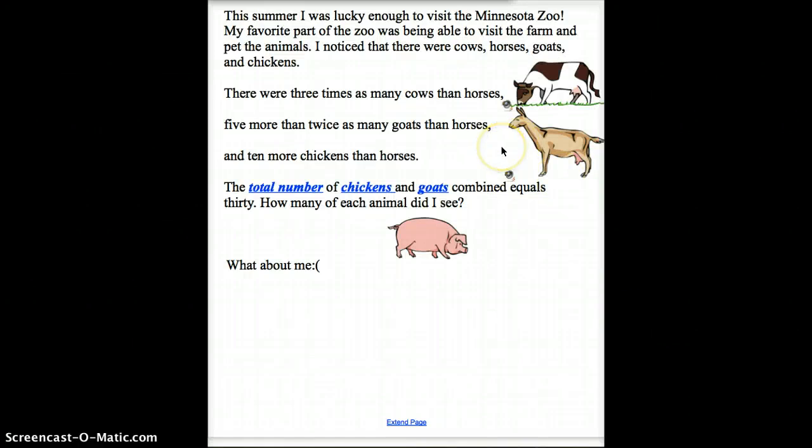The last question. We're at the Minnesota Zoo. My favorite part of the zoo was being able to visit the farm and pet the animals. I noticed that there were cows, horses. I guess I don't have a picture of the goats. Well, poor goats. And chickens. I'm not going to do the work on this one for you. You're going to do the work again. And this one's a little trickier, so I'm going to kind of set this up and then give you some hints.